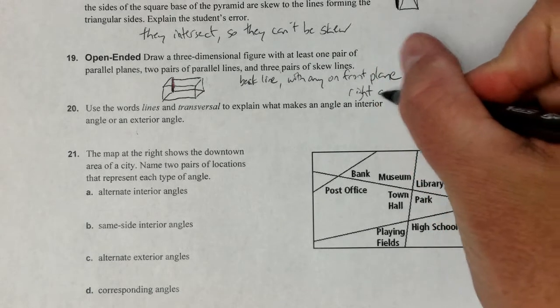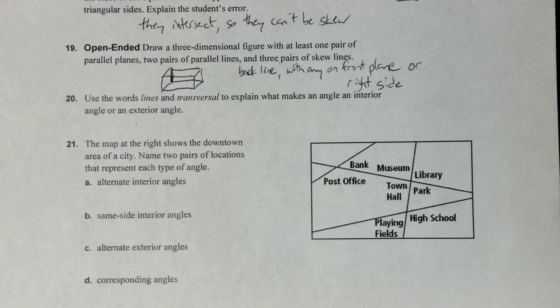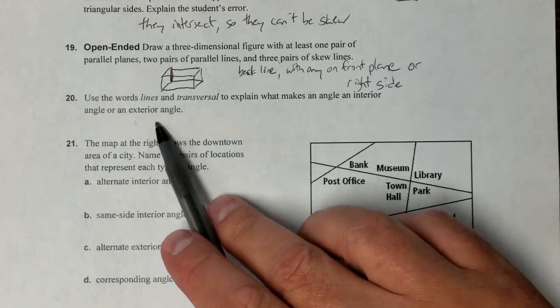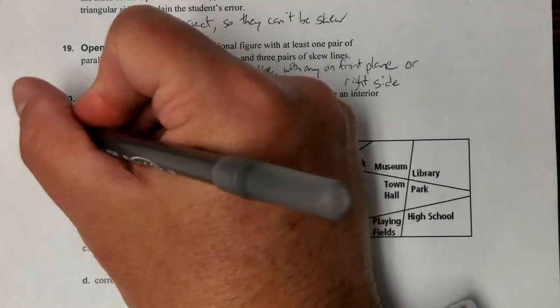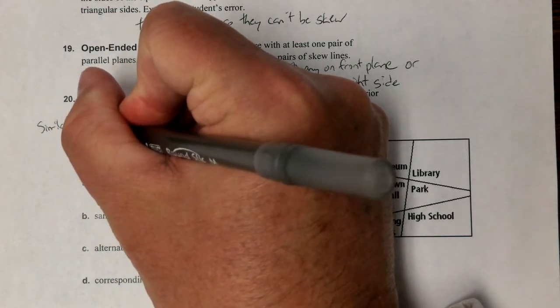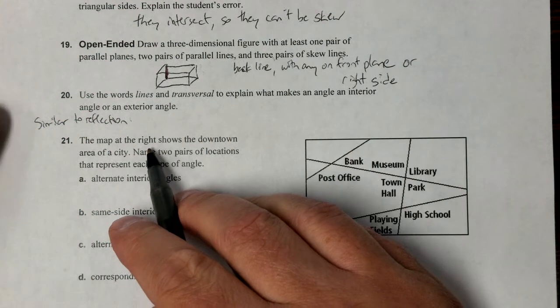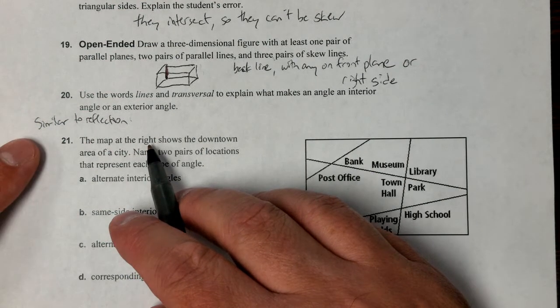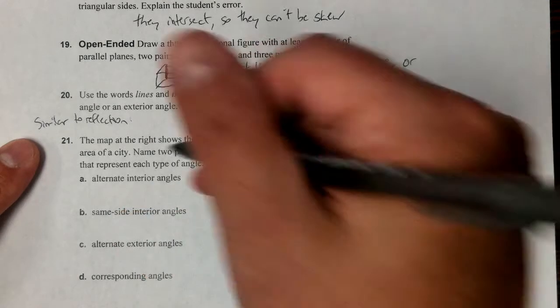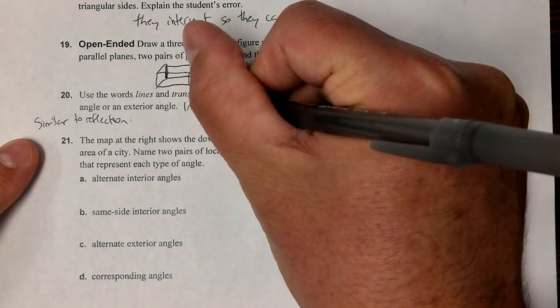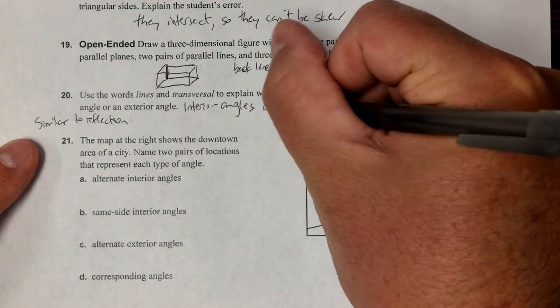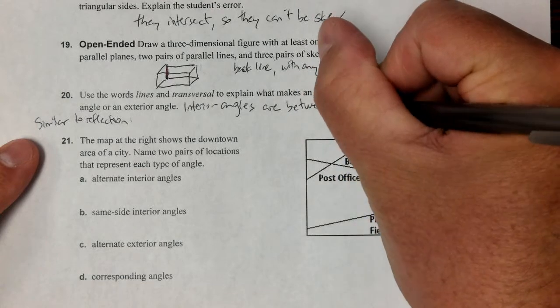Number 20: use the words lines and transversal to explain what makes an angle interior or exterior. This is similar to your reflection that you have. Interior angles are between the two lines, interior angles are between the two lines intersected by the transversal.